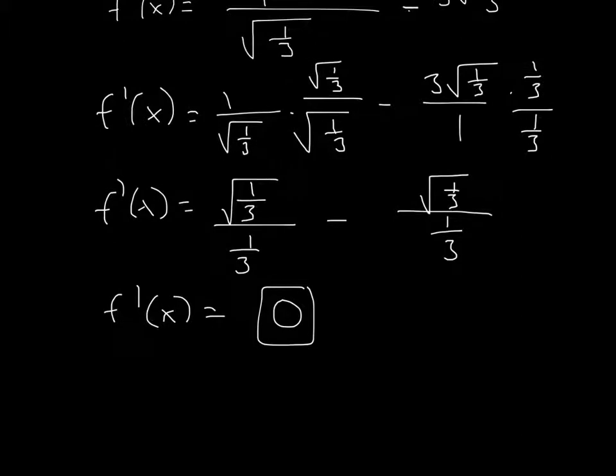So what do we get? Well, we get here, we get square root of 1 over 3. Here, it cancels out, 1 third. Here, well, 3 times 1 third is just 1. And then here, it's 1 third.